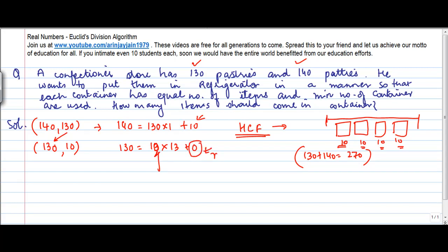So therefore the HCF is equal to 10. So if you start putting 10 items in each category, then basically you will use the minimum number of tray.